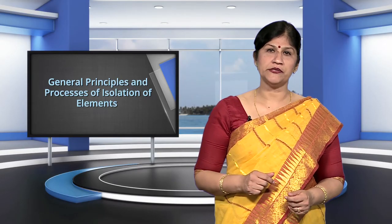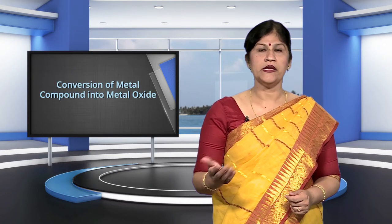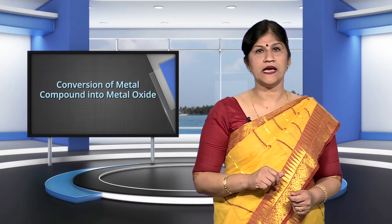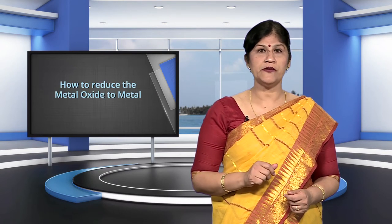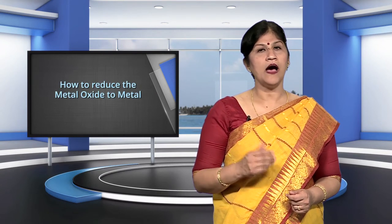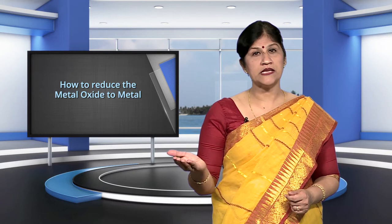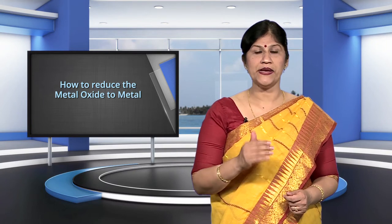In the previous module of this chapter, you studied about the first two steps in metallurgy of metals, that is concentration of ore and conversion of metal compound into metal oxide. Now, in this module, we will discuss how to reduce the metal oxide to metal.